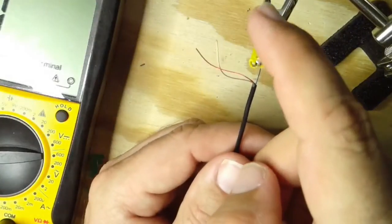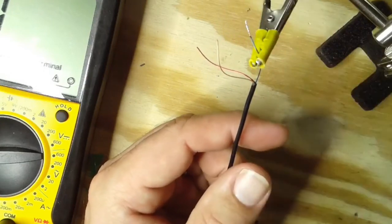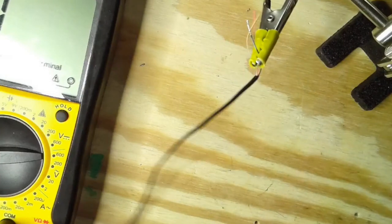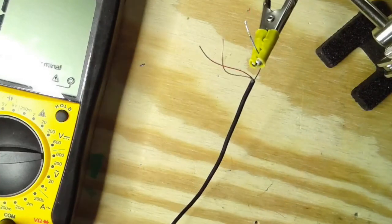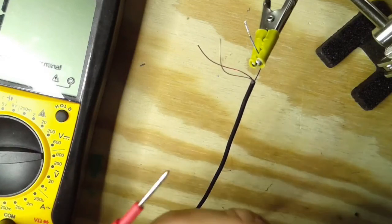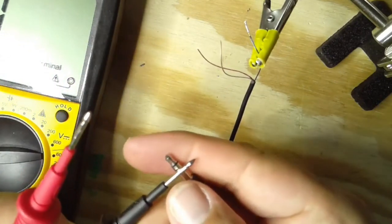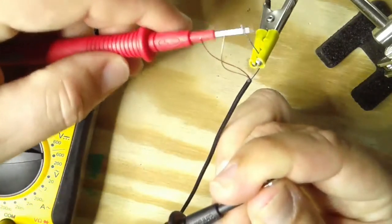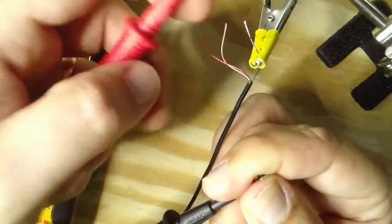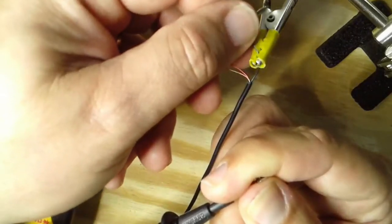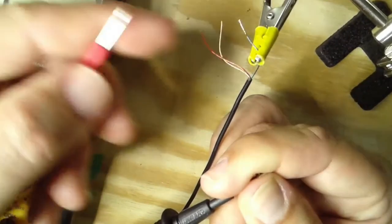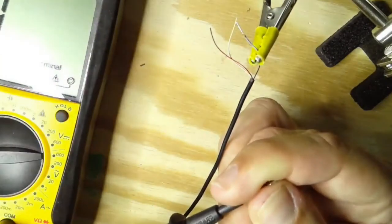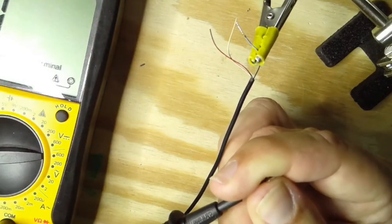All right, so we have a tinned tip here. That insulation is burned off of that. And we are going to test continuity between the tip of the jack, the tip of the plug right here, and this blue wire. As you can see, it has a good connection. So in this case, blue is our tip and the other two will be our sleeve and our ring.